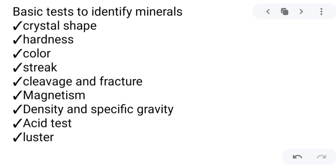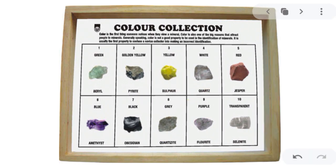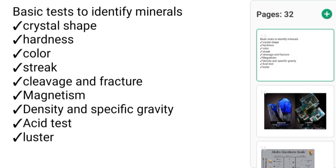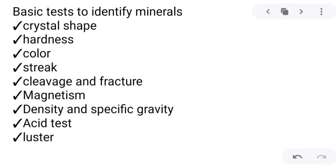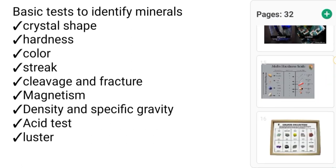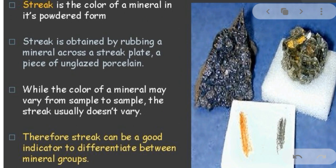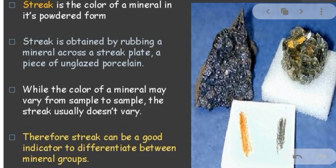Another way to identify a mineral is by color. A few minerals can be identified by color — sulfur is bright yellow, azurite is blue, and malachite is green. But the color of most minerals varies, sometimes having multiple colors in a single sample. So we use the streak method, which is more reliable than color. Streak is the color of a mineral in its powdered form, obtained by rubbing the mineral across a streak plate — a piece of unglazed porcelain. While the color of a mineral may vary from sample to sample, the streak usually doesn't vary, making it a good indicator to differentiate between mineral groups.